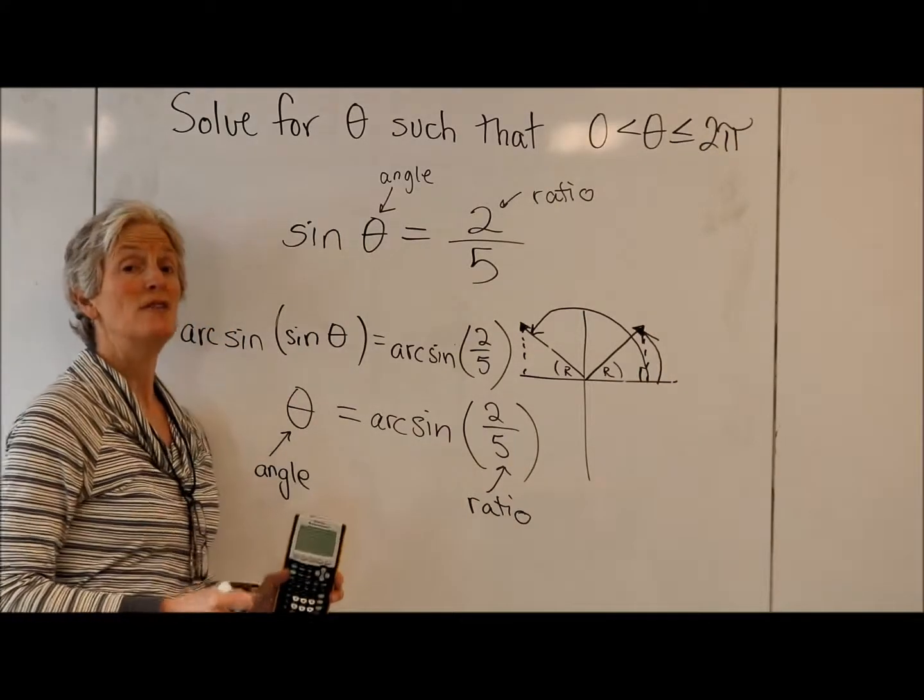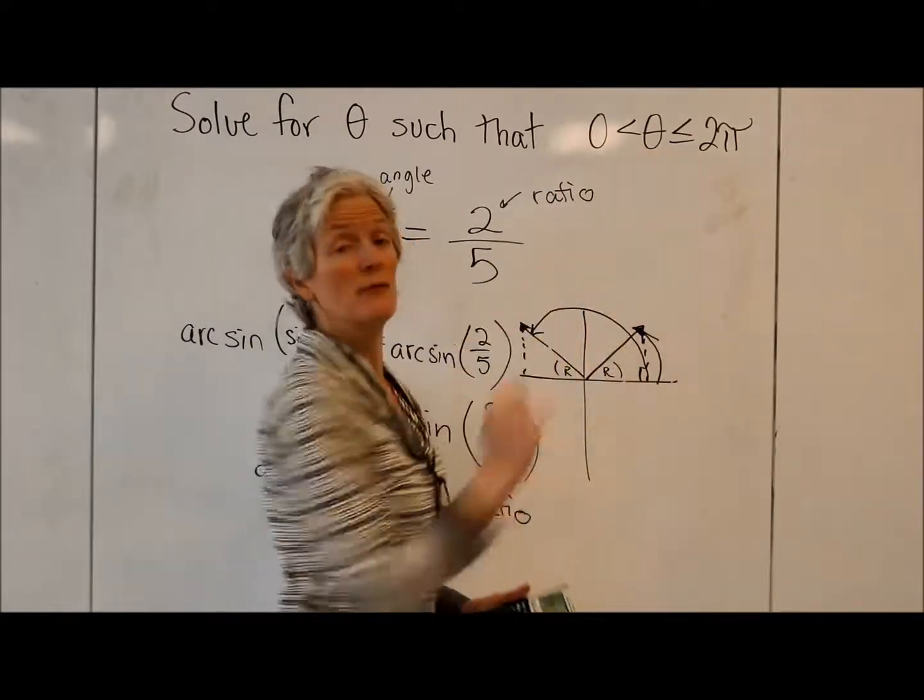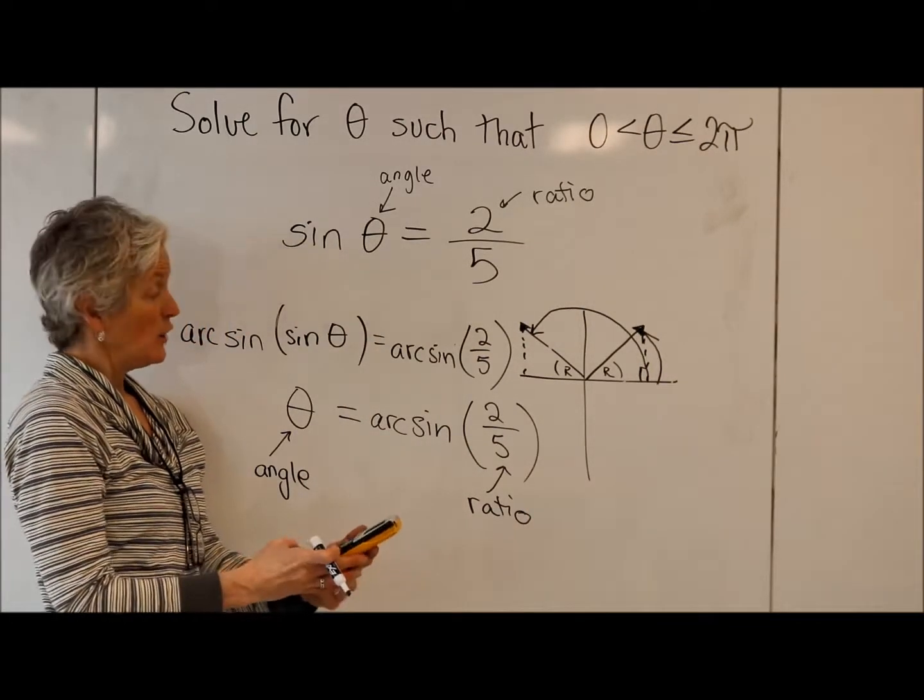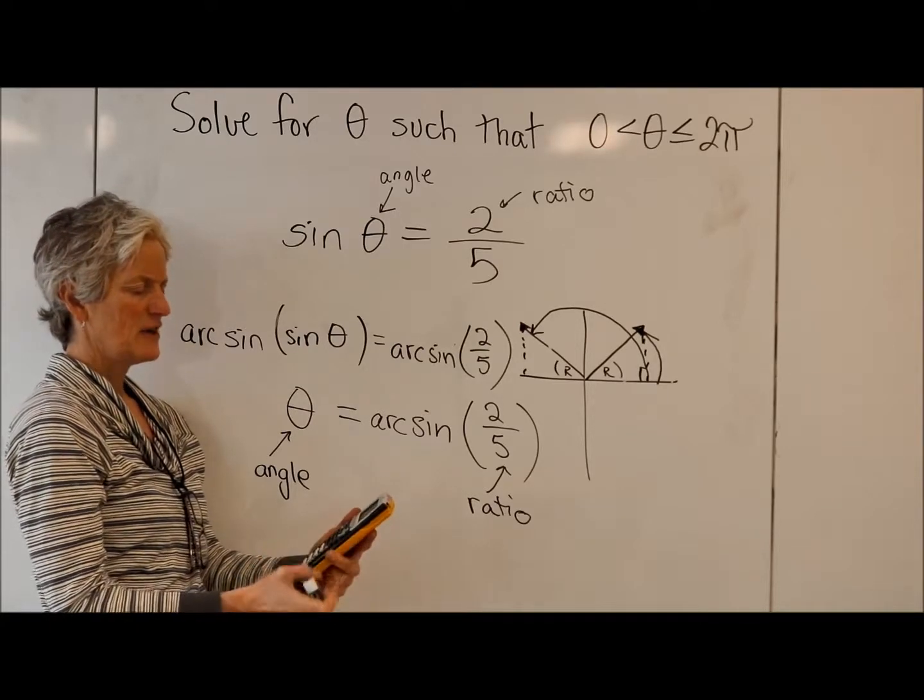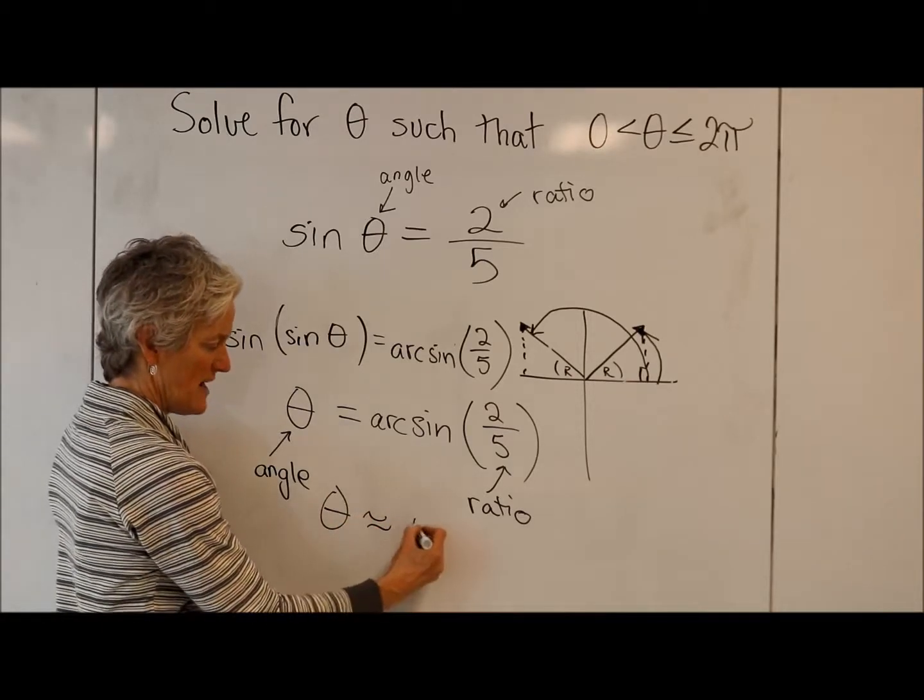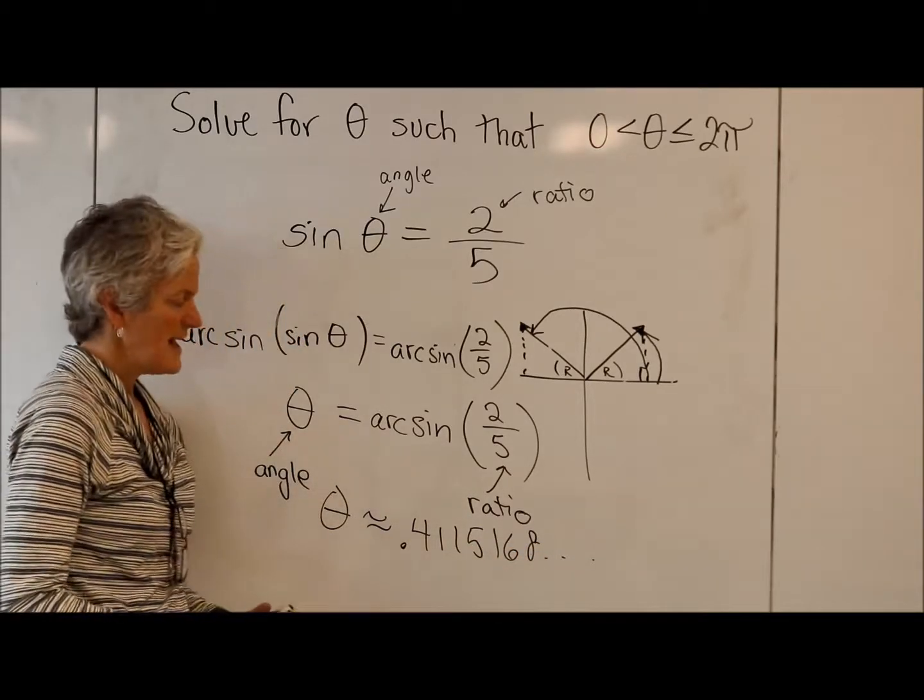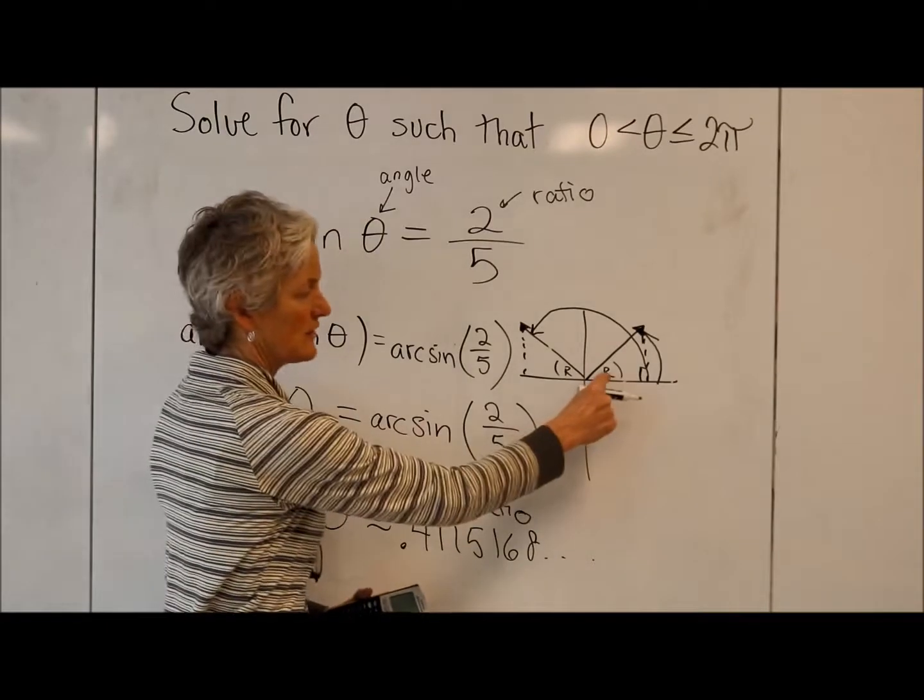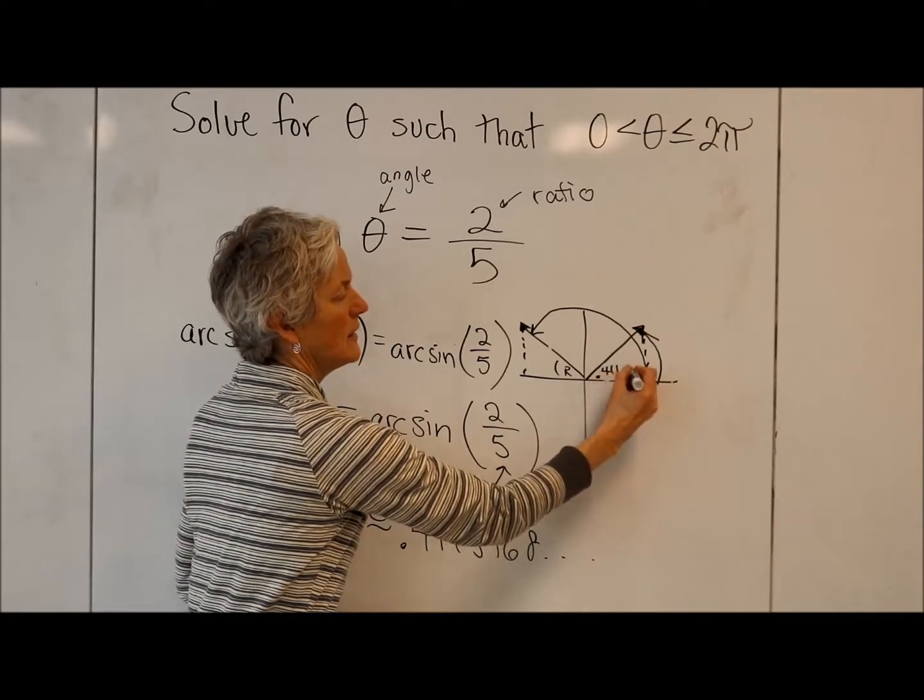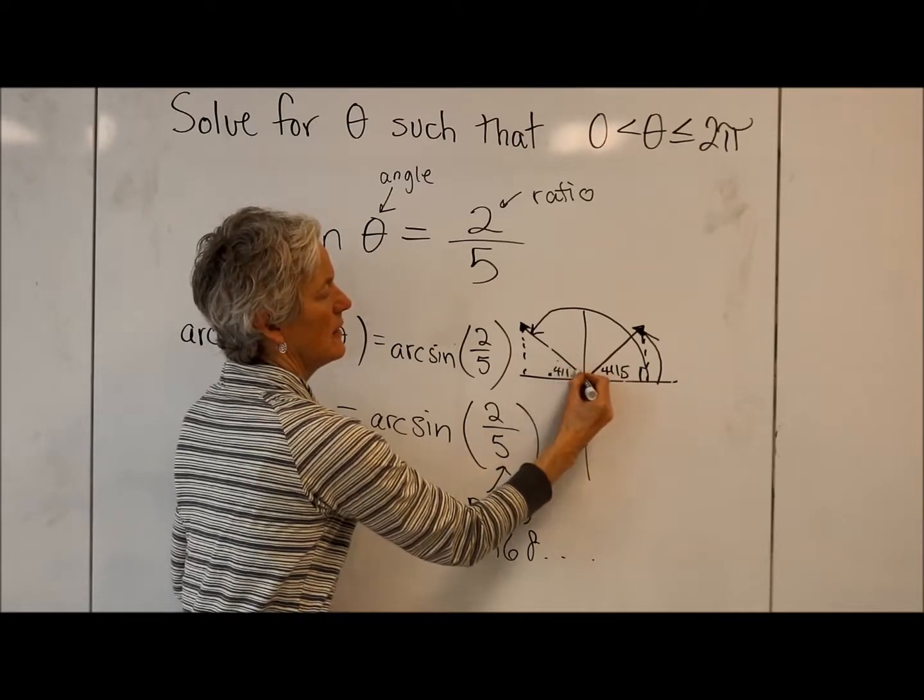Well, let's ask our calculator to help us find an answer, or at least to give us information that will help us find the answer. So I'm going to make sure I'm in radian mode. This thing tells me I'm looking for radians. So there we go. Second sine 2 fifths, enter. And I get this decimal. I'm going to do little squigglies because this is an irrational number that goes on and on forever. This is my reference angle from my picture. So I'm just going to put that .4115 there, .4115 there.